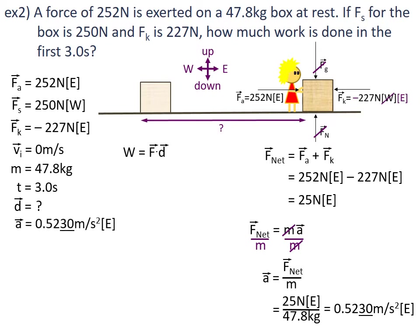We have an acceleration of 0.5230 metres per second squared east, which we can add to our variable list. Now that I have initial velocity, time, and acceleration, I can find displacement. I'm going to find displacement by using d = v_i·t + ½a·t².